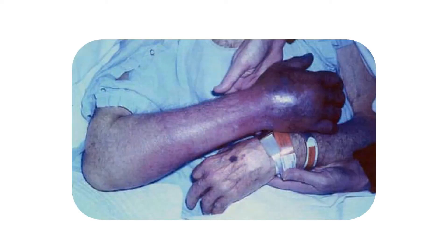There is a rare condition associated with phenytoin crystallization within the circulation called purple glove syndrome. This condition is characterized by worsening limb edema and discoloration. If not identified and corrected early, this can lead to life-threatening ischemia of the limb, which necessitates amputation.